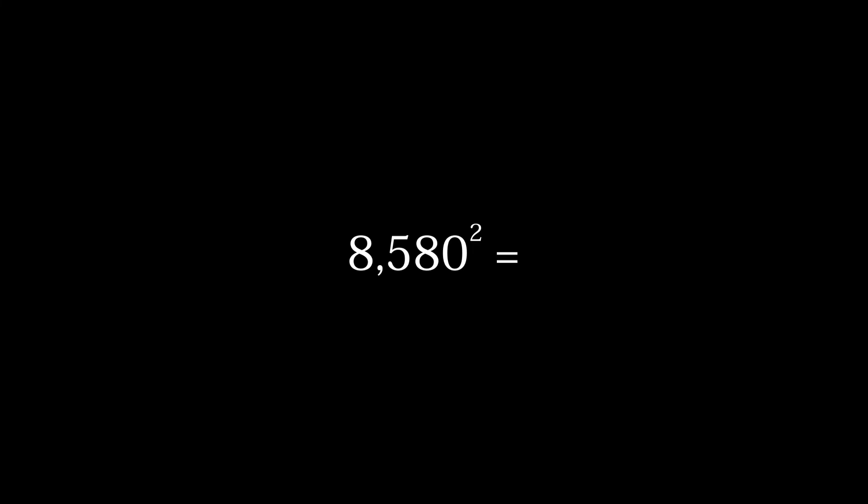For example, take the seed 8,580. We square that and get the result — 73,616,500. And taking the middle digits, we get our random number and the next seed, which would be 6,165.